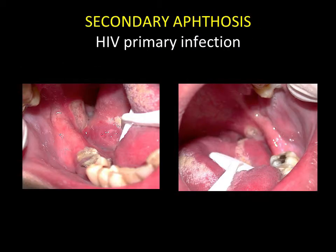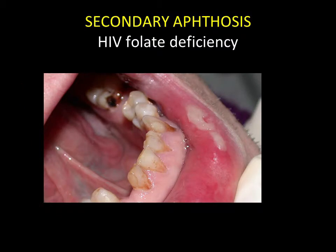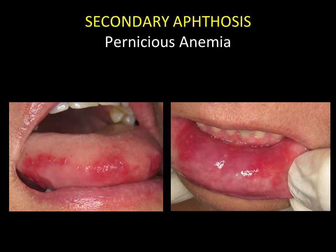In cases of secondary aphthosis, tests for a primary herpes infection should be run. Exceptionally, aphthosis ulcerations may be the primary manifestation of HIV infection. Some vitamin deficiencies can also be noted in cases of HIV infection; in particular, a folate deficiency characterised by chronic aphthosis ulceration. Pernicious anaemia may also be suggested, and a vitamin B12 assay must be run. In these cases, ulcerations have a more herpetiform appearance associated with significant erythema.